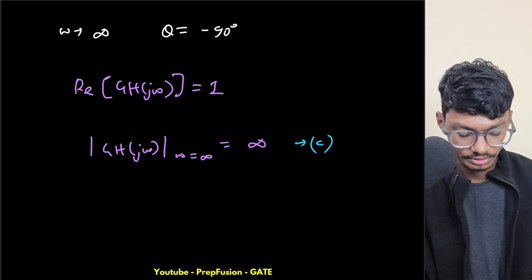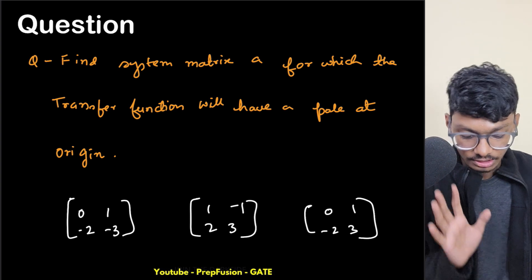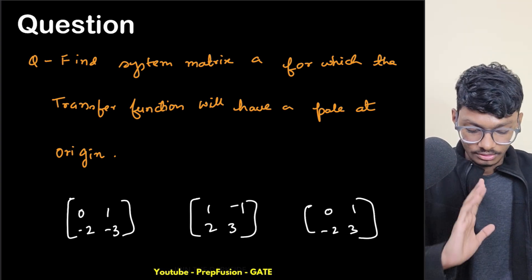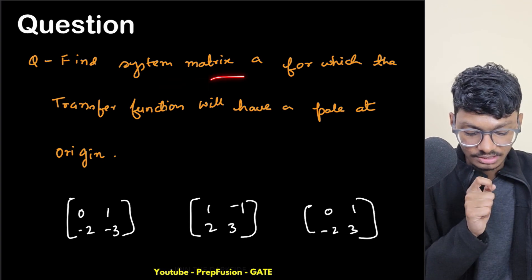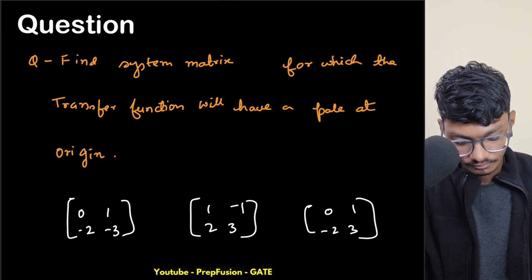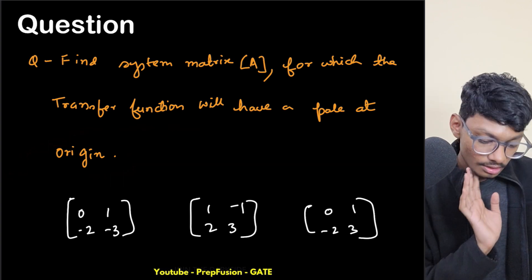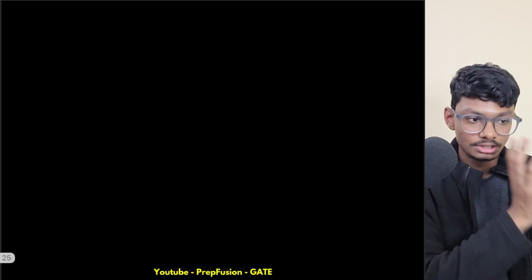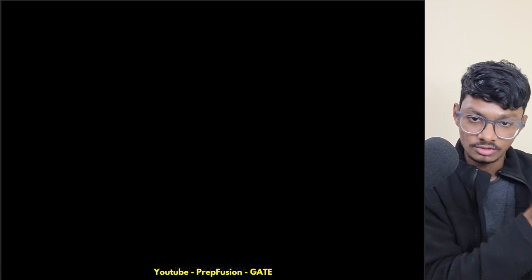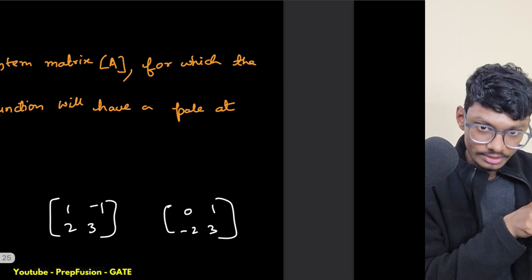Moving to the next question. A system matrix A is given, and we need to find the value for which the transfer function has a pole at the origin. The key property: the eigenvalues of the system matrix tell us the location of the poles of the system. If one pole lies at the origin, then one eigenvalue of the system matrix must be equal to zero.